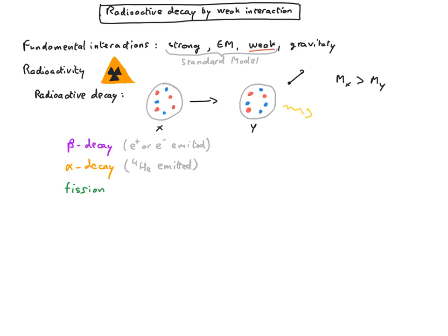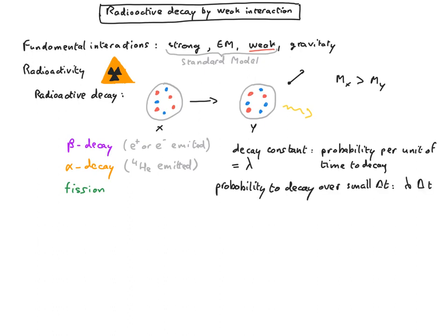These decays are probabilistic. A nucleus has a constant probability per unit of time to decay. This constant is often noted lambda. The probability for a nucleus to decay over a short time delta t is lambda times delta t. Equivalently, the probability for a nucleus to not decay over delta t is 1 minus lambda delta t.